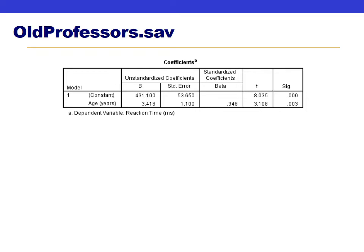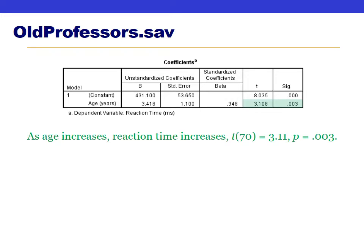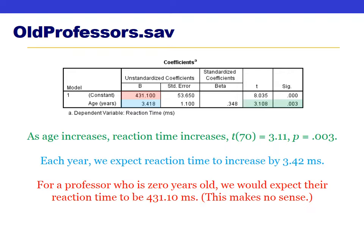Let's see this in action. We previously ran a regression to see if a professor's age predicts their reaction time, and found that older professors are slower — p = 0.003, with beta showing that every additional year of age adds about 3.5 milliseconds to reaction time. However, alpha was 431 milliseconds, which represents the predicted reaction time for a professor who is zero years old — which makes no sense.